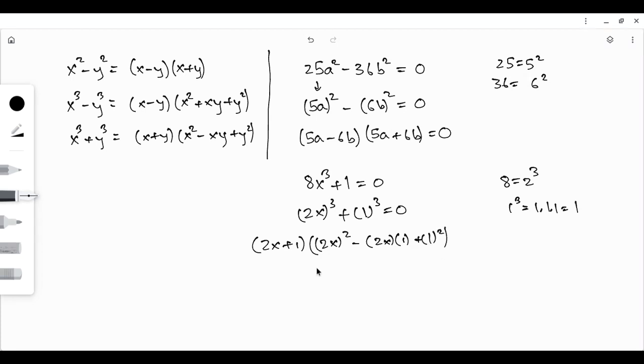And you can simplify that a little bit. 2x squared is 4x², 2x times 1 is 2x, and 1² is 1.